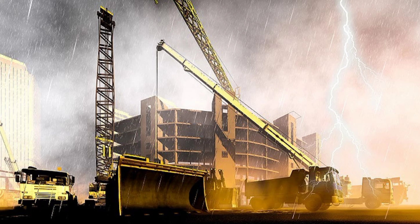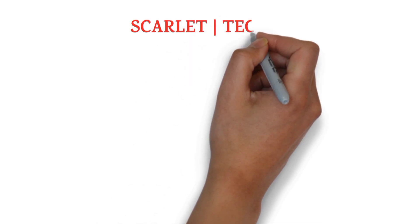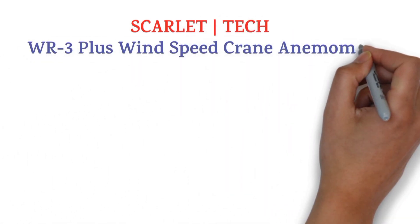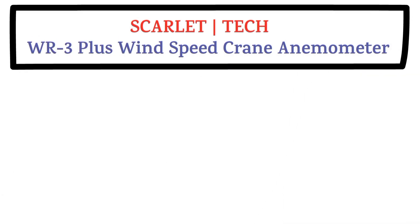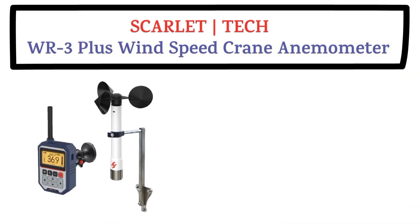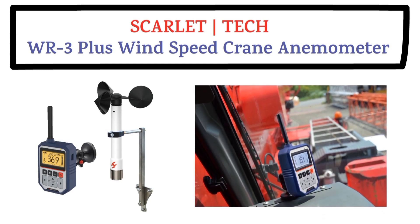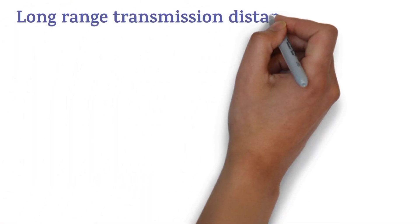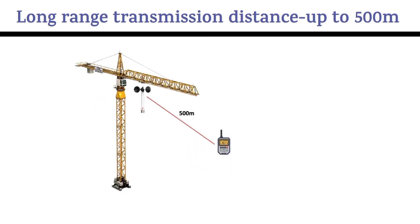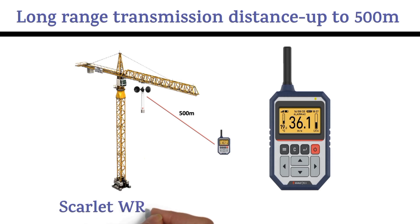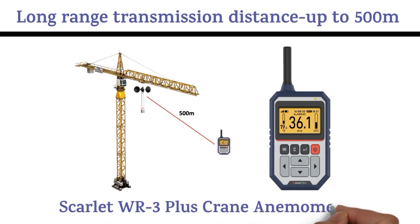Due to high wind speed, a crane may topple. To avoid crane hazards and deadly accidents, installing a wireless anemometer on your crane is important to ensure crane safety. Scarlett Tech has recently launched the WR3 Plus wind speed crane anemometer. It is easy to use and suitable for all types of cranes. Simply install the wireless wind speed sensor on your crane and put the receiver inside the crane cabin. The WR3 Plus has a long range transmission distance up to 500 meters with a long battery life up to 3 years, so you don't have to worry about complicated cables.